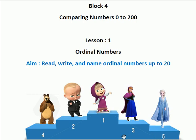Here the numbers 1st, 2nd, 3rd, 4th and 5th tell us the positions. The numbers which tell us the position are called ordinal numbers. Today we are going to learn how to read, write and name ordinal numbers up to 20.